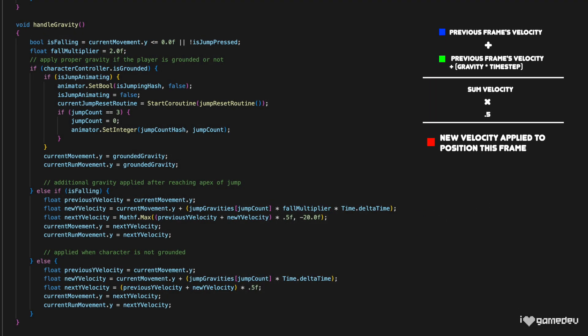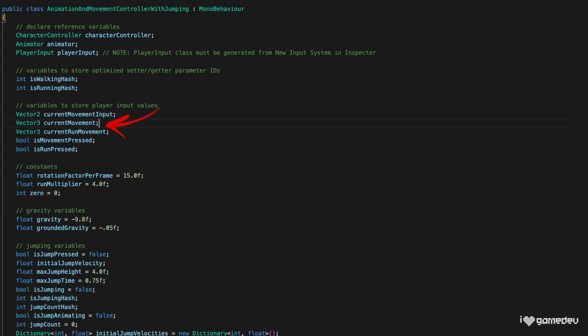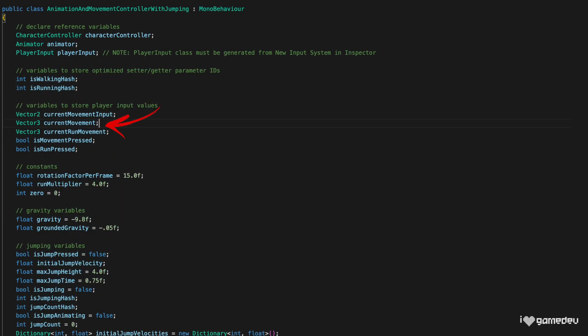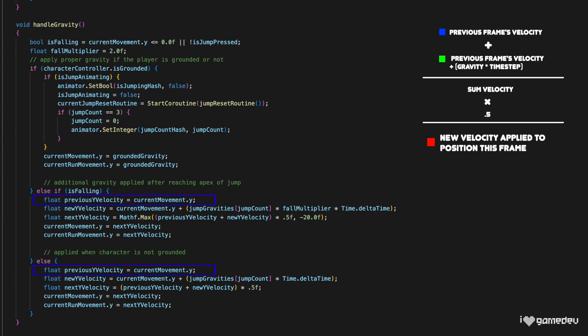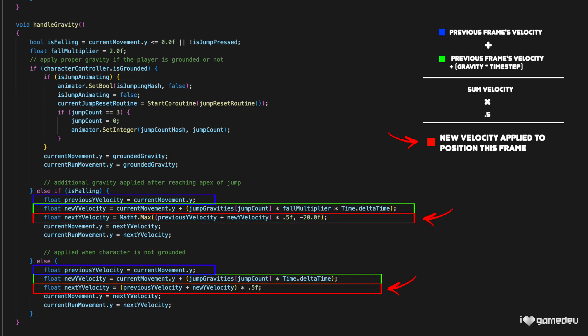And if we take a look at our handleGravity method, this is actually exactly what we're doing in our current implementation. We set a variable previousYVelocity equal to the currentMovementY value, which is stored at the class level and reused every frame. Then we create a new variable titled newYVelocity that is equal to the currentMovementY value plus the incrementalGravity. We then create a third variable titled nextYVelocity, which performs the averaging of the previousYVelocity and the newYVelocity.